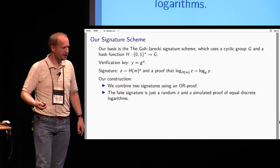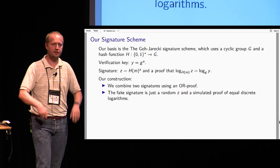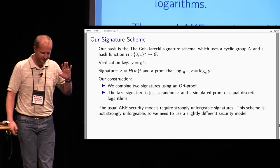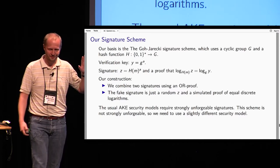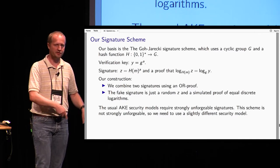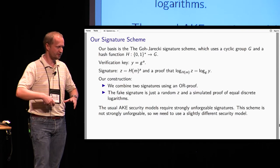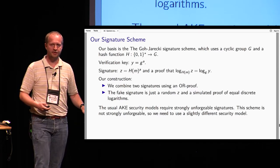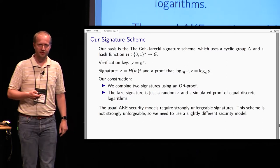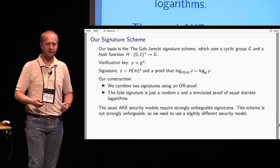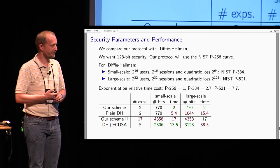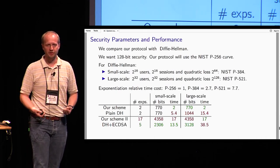There are some details to get right, but essentially: throw random oracles at it and it works — we get a proof with tight security. Of course, we can only prove existential unforgeability, not strong unforgeability, and that causes some cascading problems when we plug the signatures back into the key exchange. But the end result is a really nice tight authenticated key exchange and a nice tight signature scheme. Those of you who can count exponentiations have by now counted fairly high, so let's look at performance: we don't get the same great performance as before, but as a first thing you might think about implementing, we are competitive.